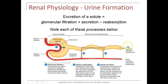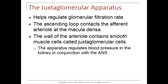Urine is the product of renal function. By reabsorbing and secreting, we alter the composition of solutes in the plasma. We'll talk about how the kidney adjusts water volume, electrolyte volume, and blood pH.